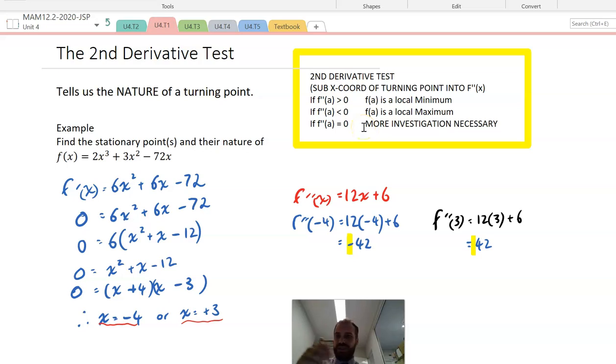So the second derivative test, this test of concavity, it won't do everything for you. If you do get an answer of zero here or here, you've still got a turning point. You just need to explore what that turning point is in another way. That's the second derivative test. It's just a specific concavity test.